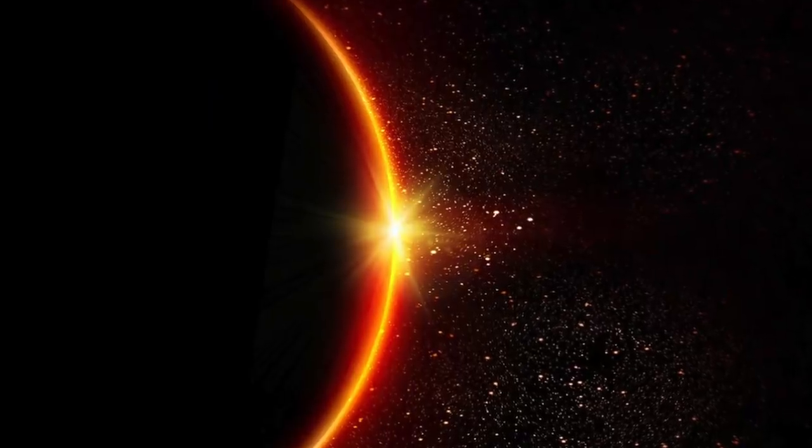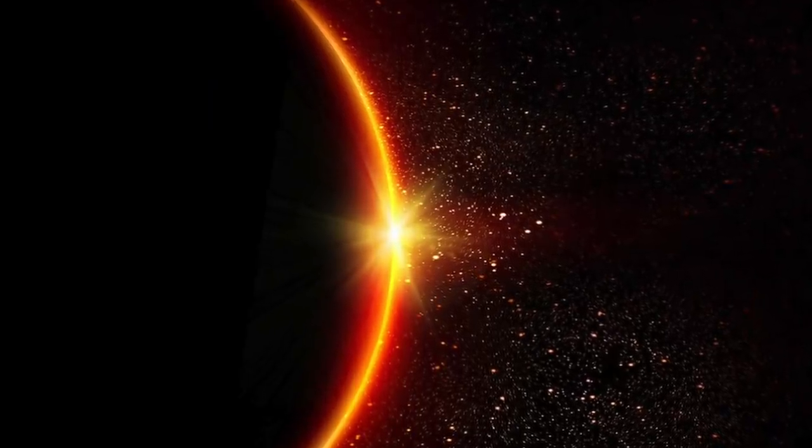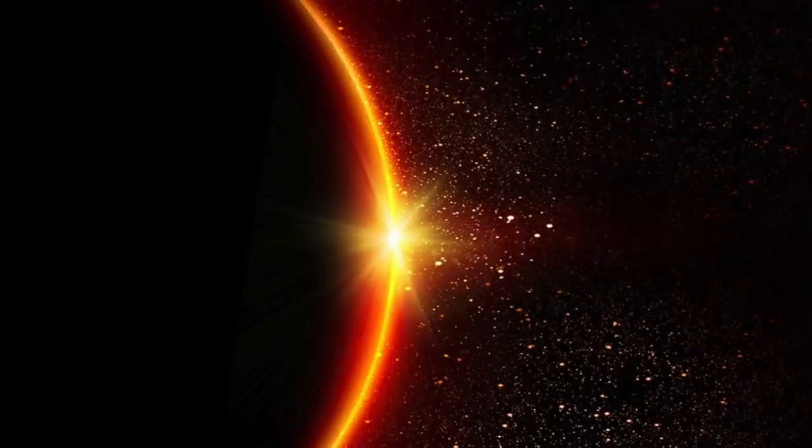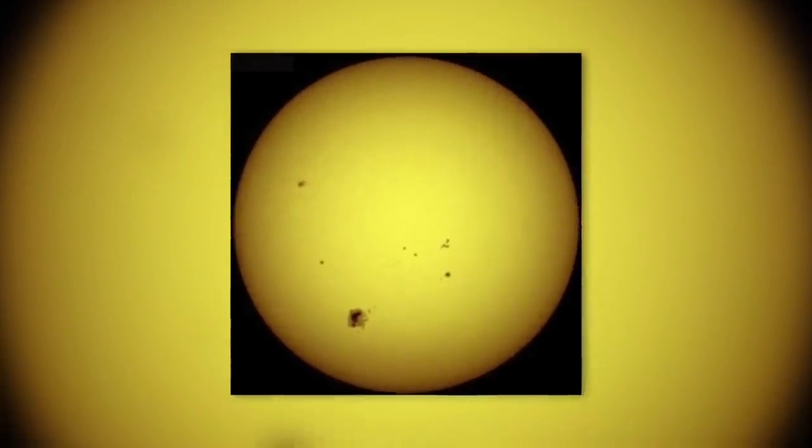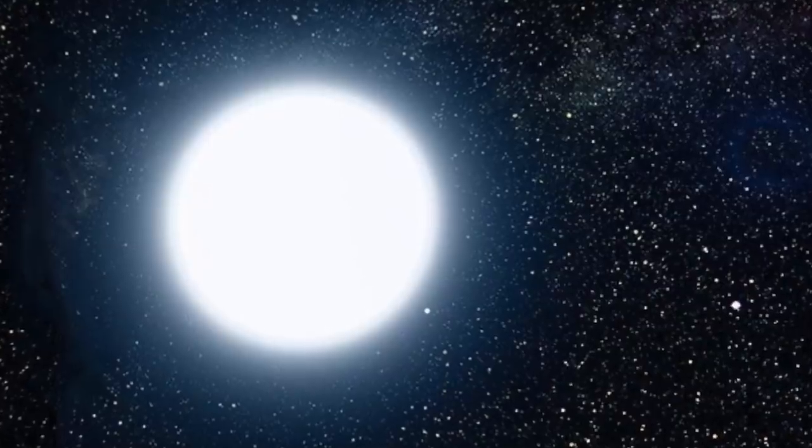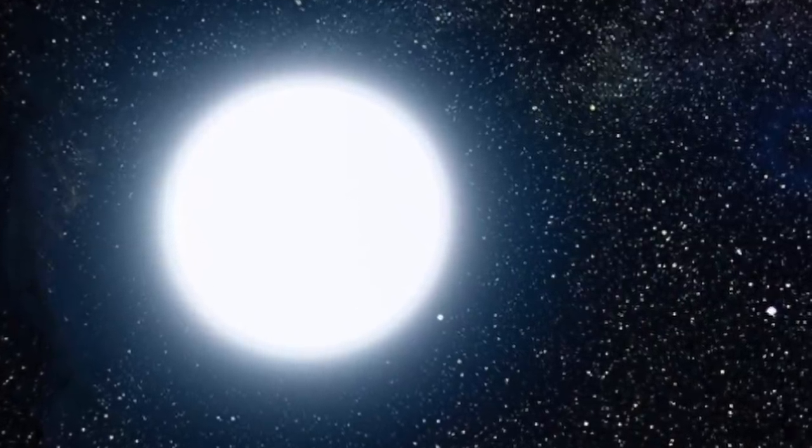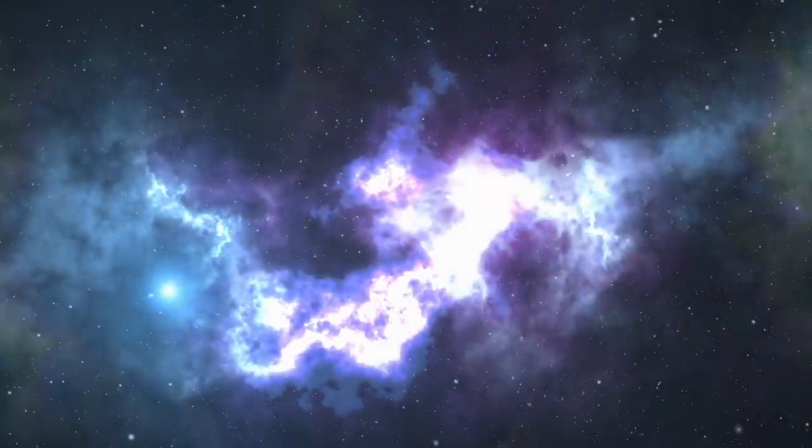The stage of the red giant star will not represent the last in the existence of the Sun. Eventually, the imposing celestial body will shed its outer layers of gas. What will then remain will be a small, shrunken white dwarf star and planetary nebula.